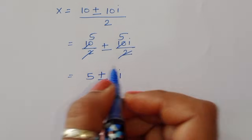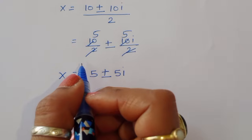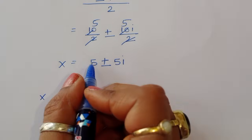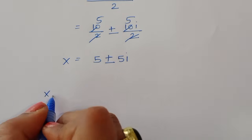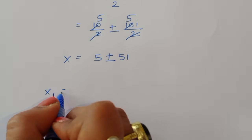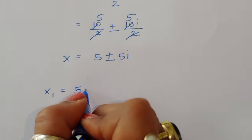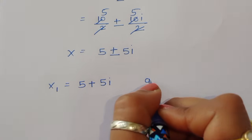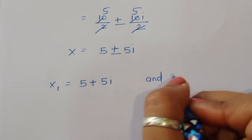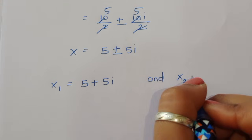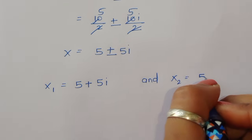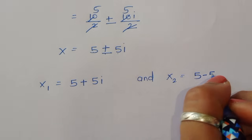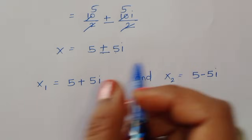This is the value of x. We get two values: x1 is equal to 5 plus 5i, and x2 is equal to 5 minus 5i.